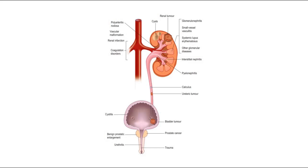This diagram shows various causes in the urinary tract that can cause hematuria. Vascular causes like polyarteritis nodosa and vascular malformation, renal infarction or coagulation disorders. Intrarenal causes like renal cyst, renal tumor. Autoimmune diseases like vasculitis or SLE, interstitial nephritis, glomerulonephritis, or pyelonephritis.